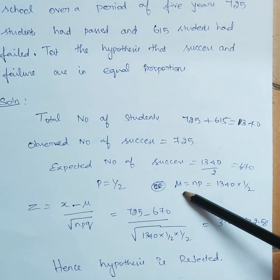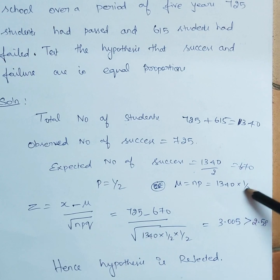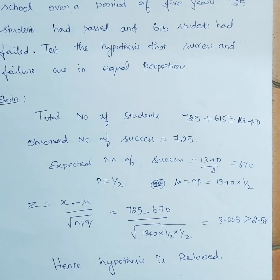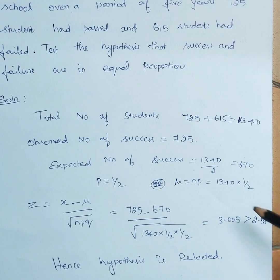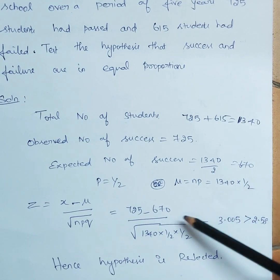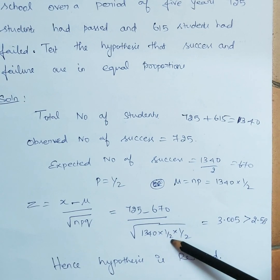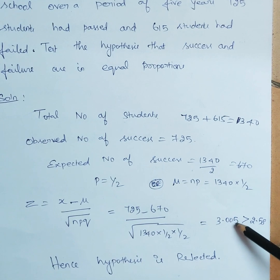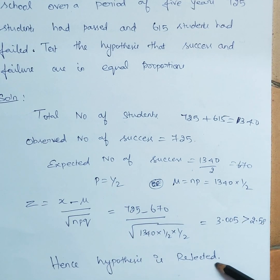Using the formula mu equals n times p: n is 1340 and p is 1/2 (because success and failure are in equal proportion), so mu is 670. q is 1 minus p, which is also 1/2. Applying z equals (x minus mu) divided by root(npq), substituting these values and simplifying, the answer is greater than 2.58, so the hypothesis is rejected.